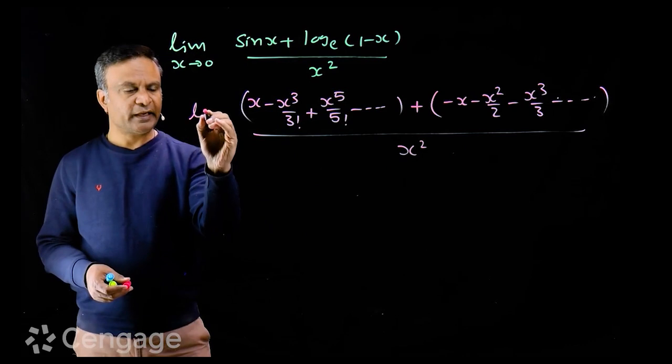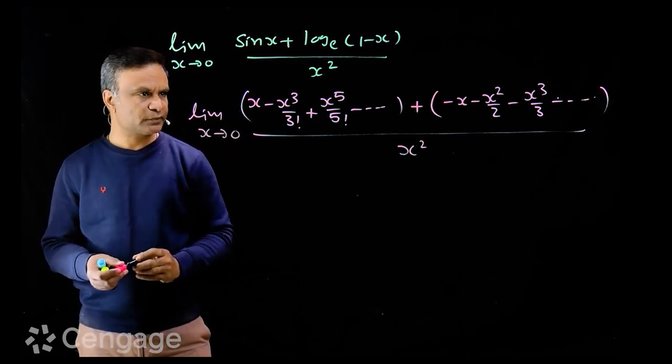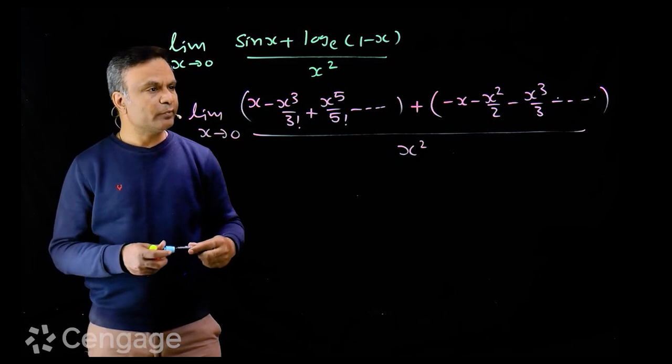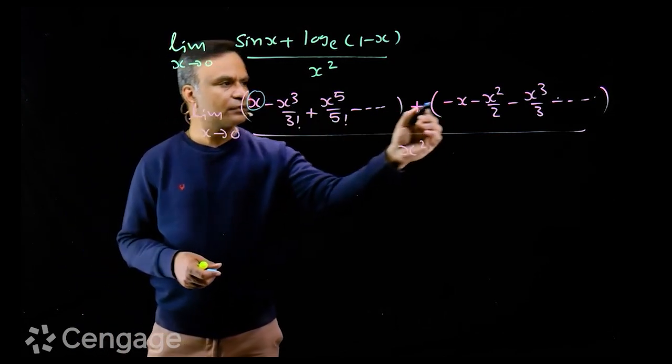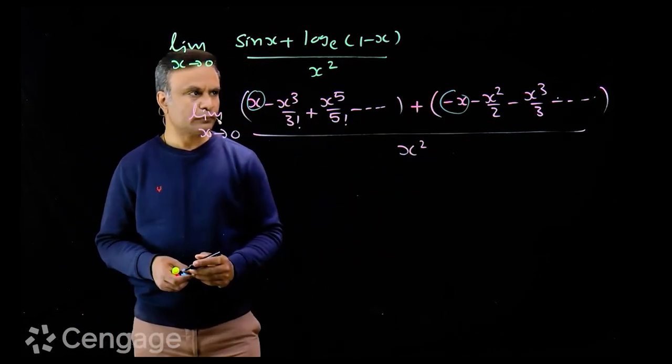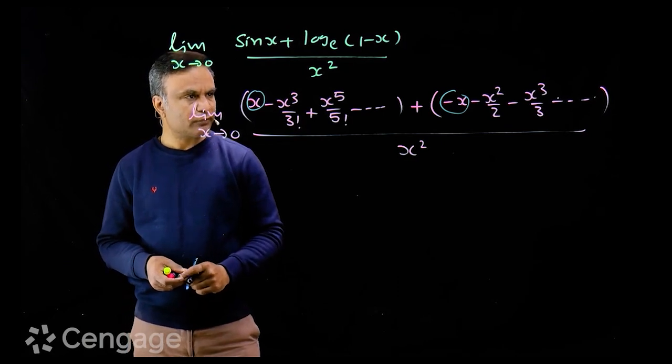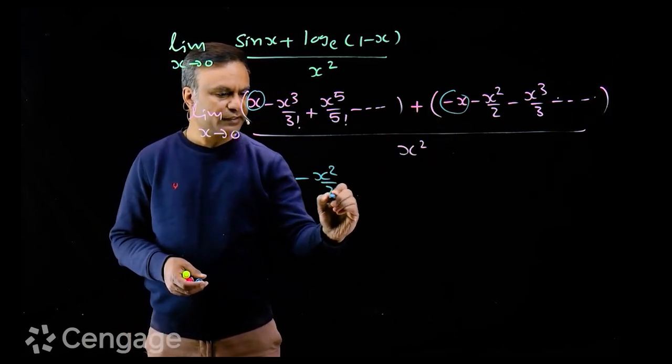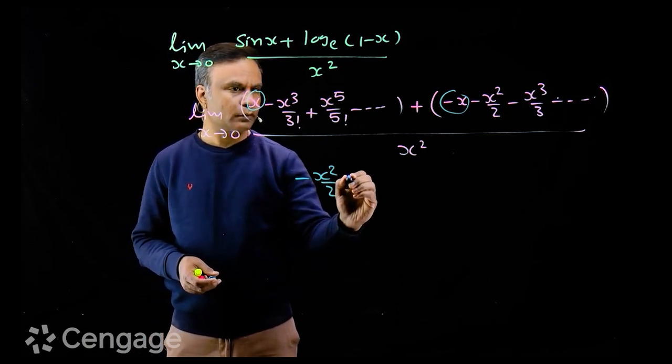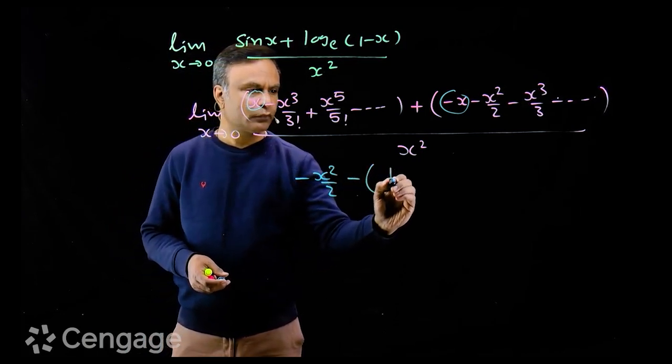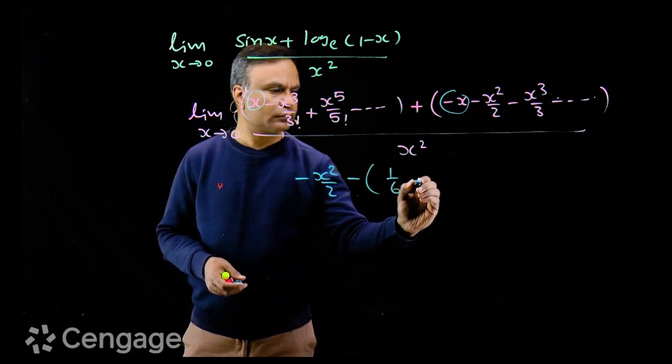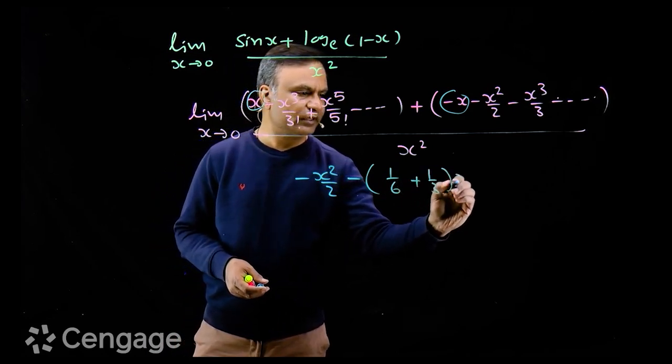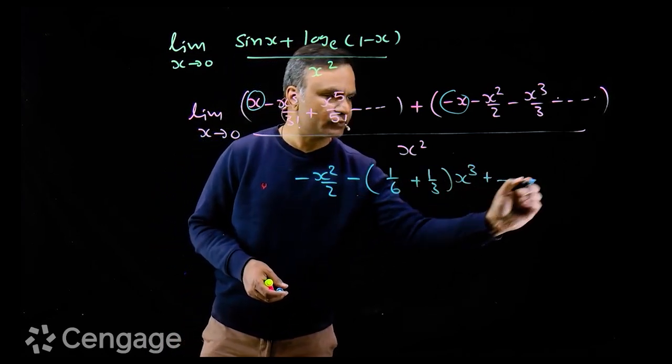See again, in numerator x gets cancelled out. Then we have a least power of x is x square. The term is minus x square over 2 minus 1 upon 6 plus 1 upon 3 multiplied by x cube and so on. We will have then higher powers of x.